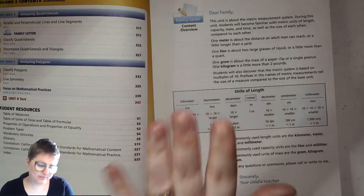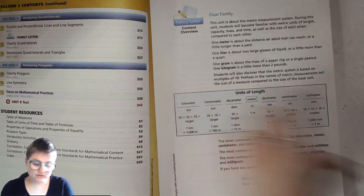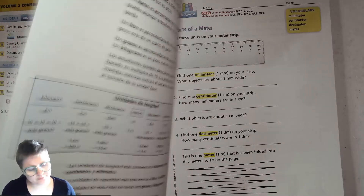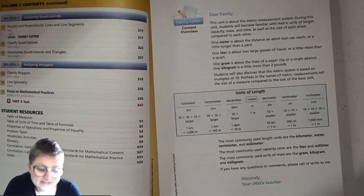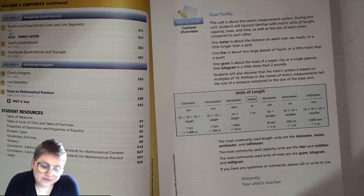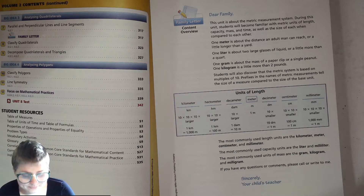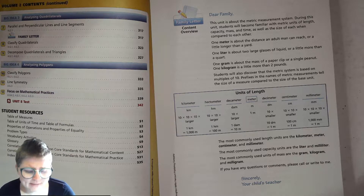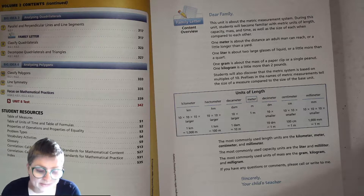It starts with a little letter. I would rip this page out and stick it somewhere easily accessible because this little chart right here is super helpful. It says this unit is about the metric measurement system. During this unit, students will become familiar with metric units of length, capacity, mass, and time, as well as the size of each one compared to the other.